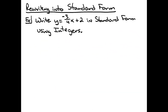In this video, I'm going to do one example of rewriting an equation into standard form. The given equation will be in slope-intercept form, and we want to write it in standard form using integers. So the first thing I'm going to do is start with the original equation, which is y equals negative three-fourths x plus two.